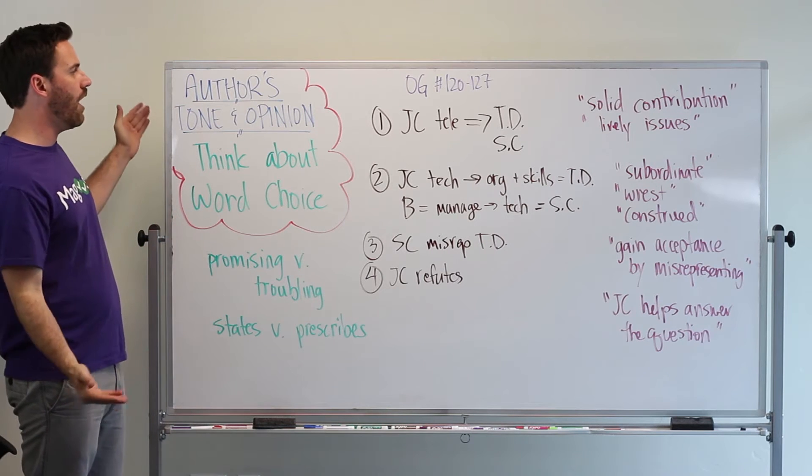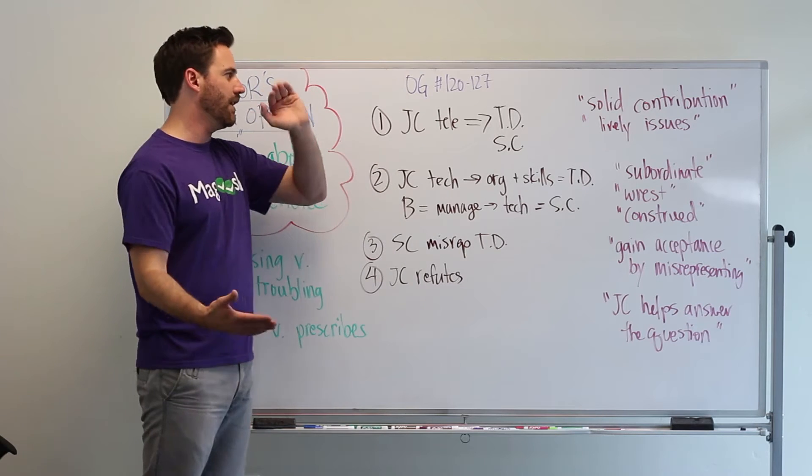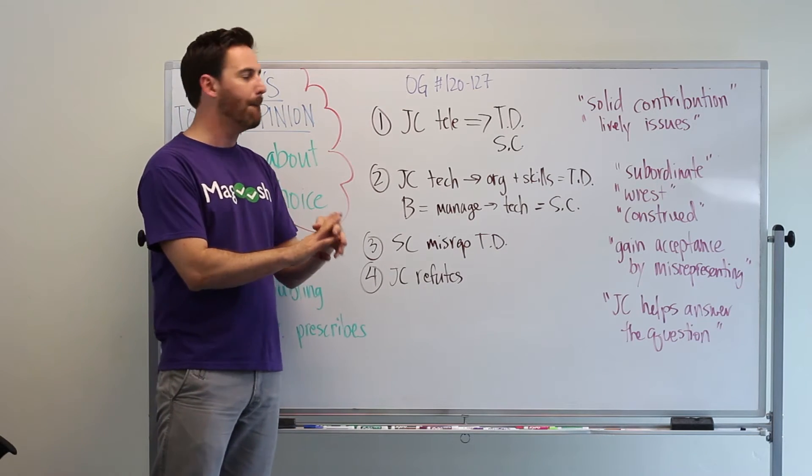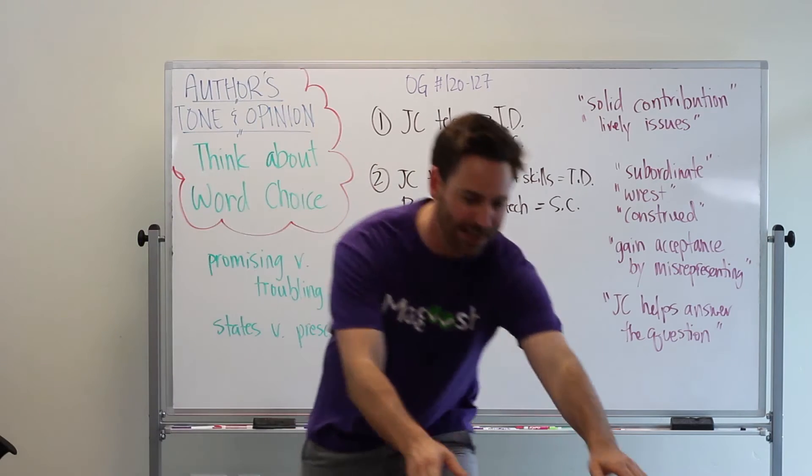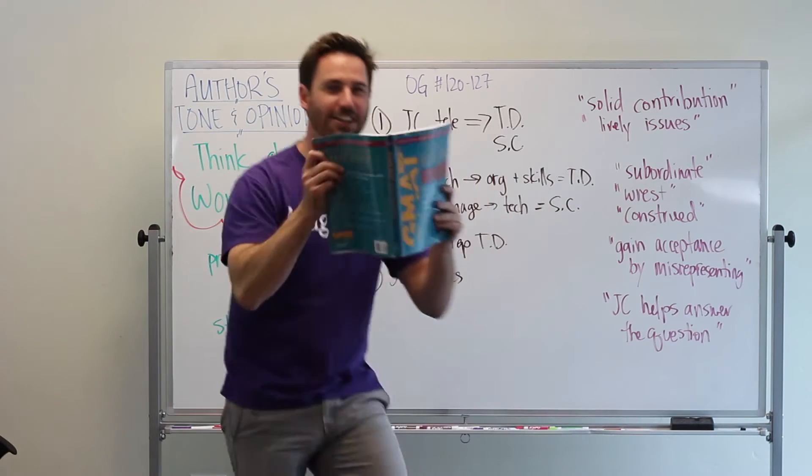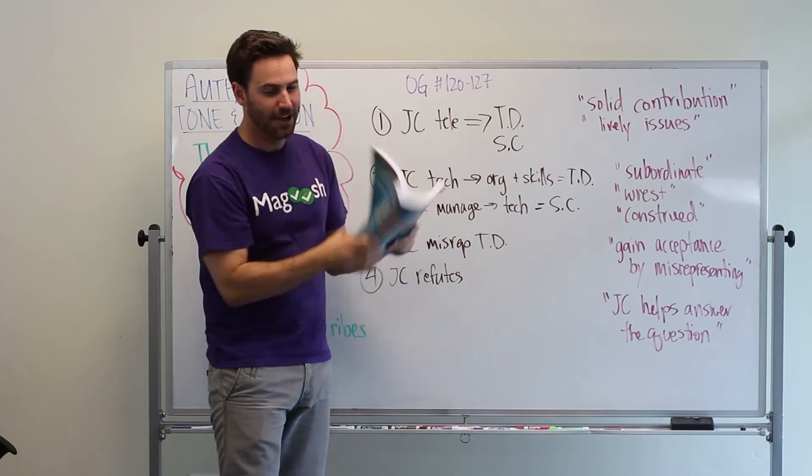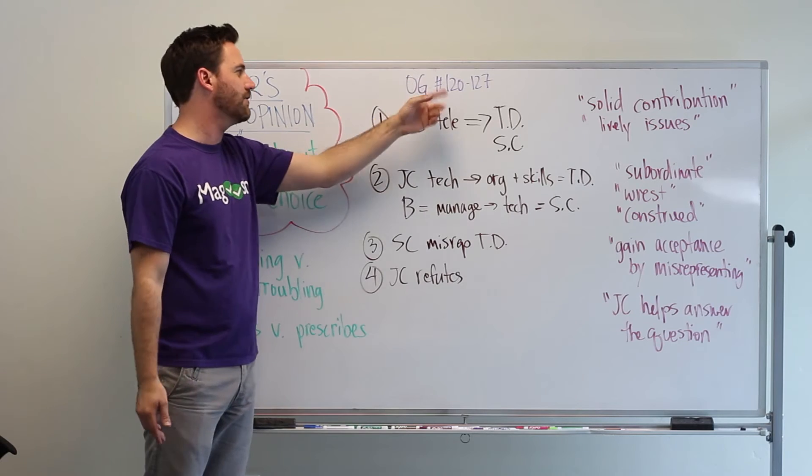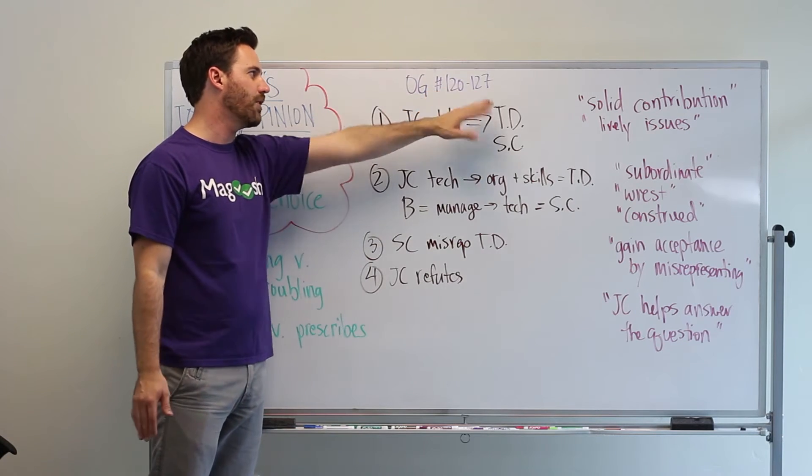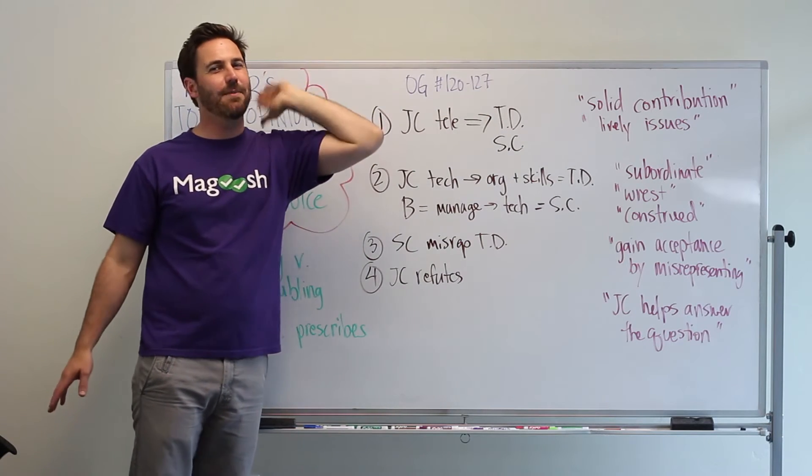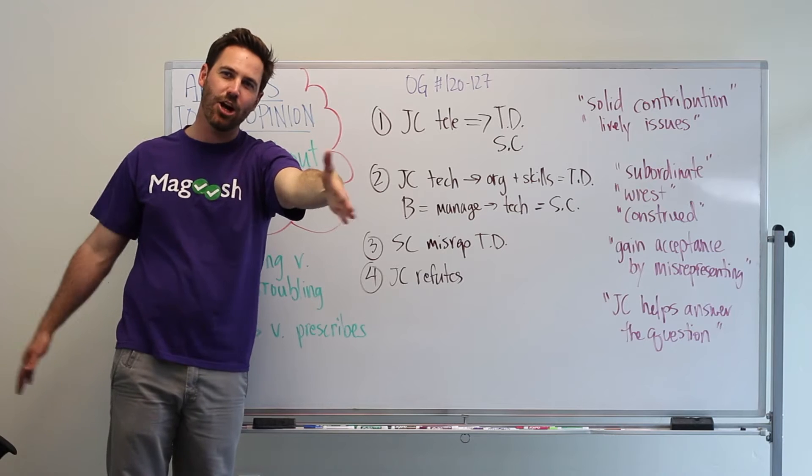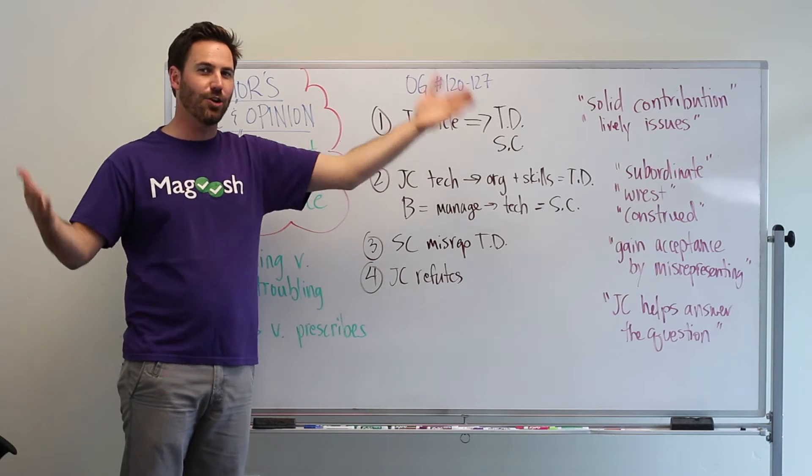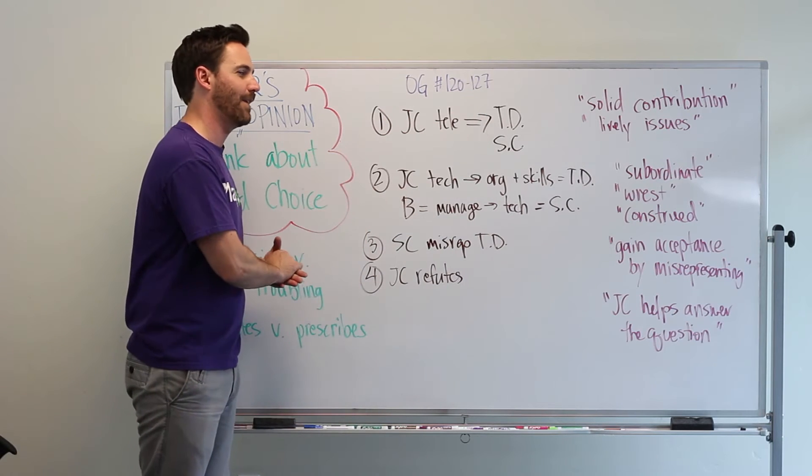Okay. So, for the practice today, we're in the official guide to the GMAT. It's the green book. It looks like this. Ha! I have it right here. This is the book. It's the 13th edition. And, it's the passage that's associated with numbers 120 through 127. I recommend stopping the video right here, go actively read that passage, and then come back. So, hit pause, go read the passage, and come back. I'll just wait.